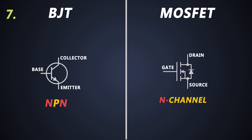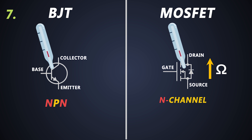As BJT is a Negative Temperature Coefficient device, when it saturates, it dissipates less heat. But the MOSFET is a Positive Temperature Coefficient device, so when temperature increases, its resistance also increases. As its resistance increases, power dissipation across it also increases, which results in even more temperature rise. So when the MOSFET saturates, it dissipates more heat.